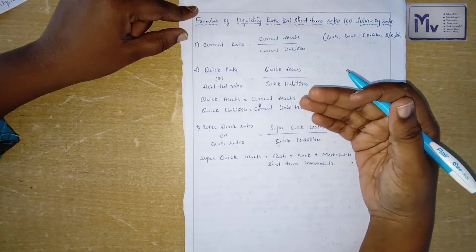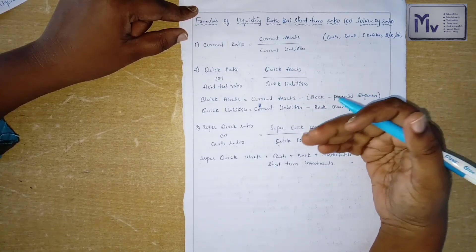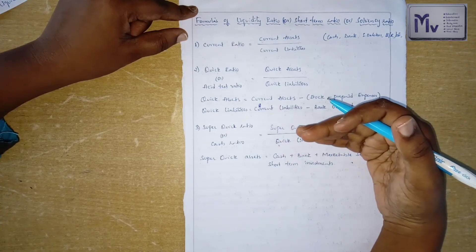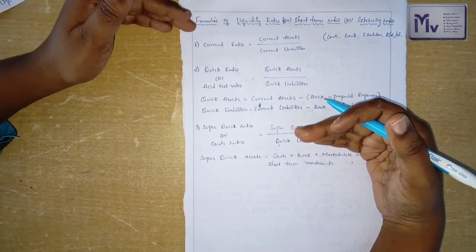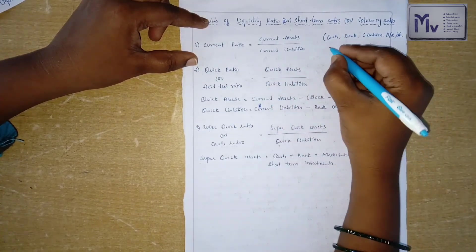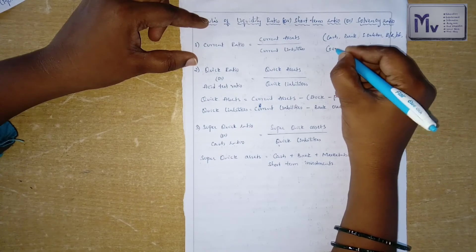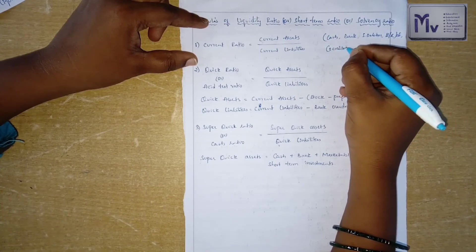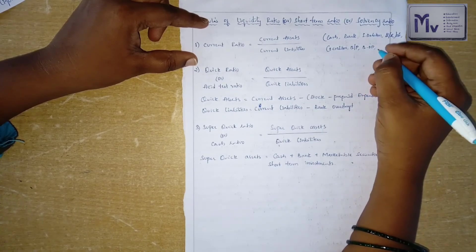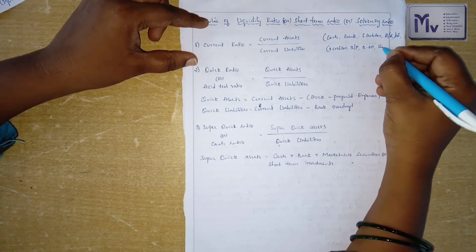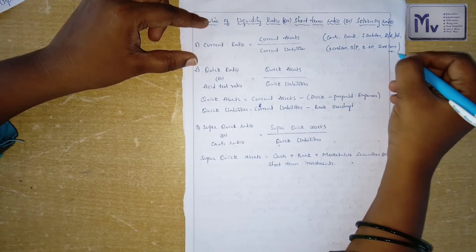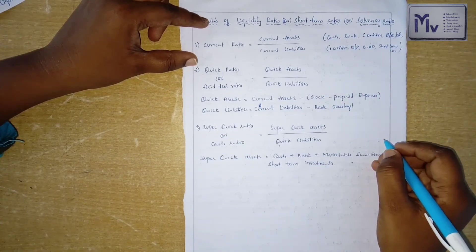From the balance sheet, on the asset side, we have fixed assets and current assets. Fixed assets are fixed and current assets change. Coming to current liabilities, those include sundry creditors, bills payable, bank overdraft, short-term loans, etc. These are the current liabilities.